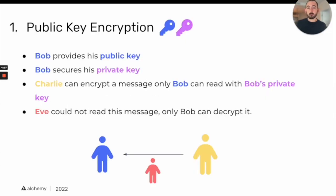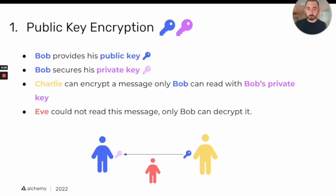With public key cryptography, the first use case is encryption. Bob, the blue character on the left, has a public key and provides it to Charlie on the right. Bob secures his private key so nobody else can access it. Charlie can then encrypt a message that only Bob can read, using Bob's public key.